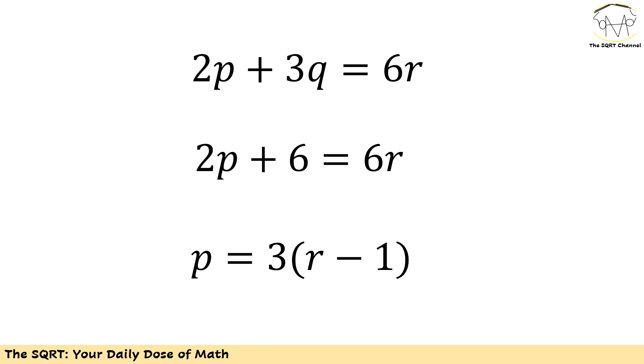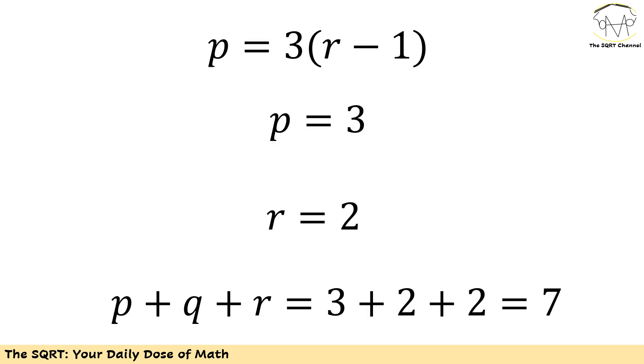Now p equals 3 times another number. However, p is a prime number, so p is going to be 3 here. If p is 3, then r is going to be 2, since r minus 1 needs to be 1. And then we have p plus q plus r equals 3 plus 2 plus 2 or 7. And we found the answer.